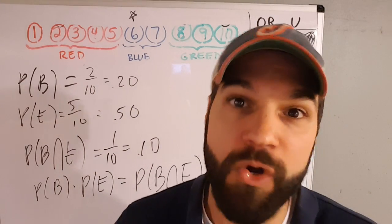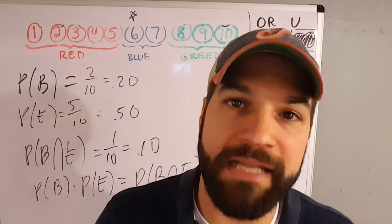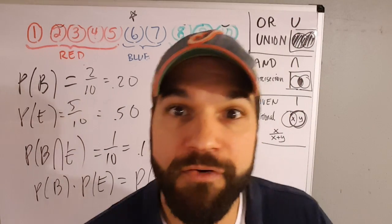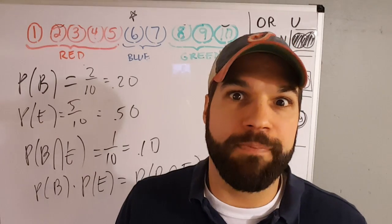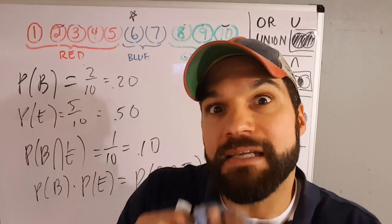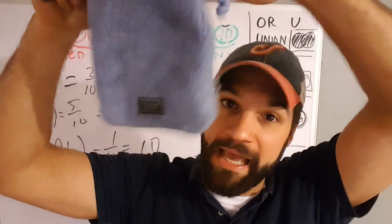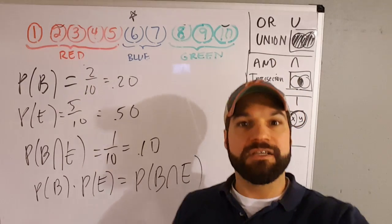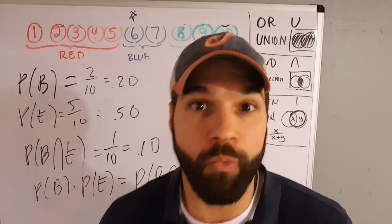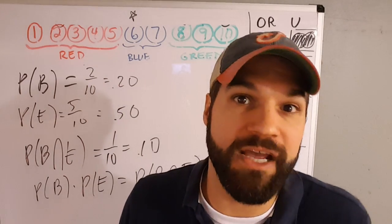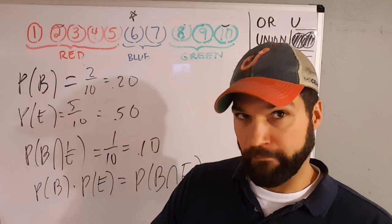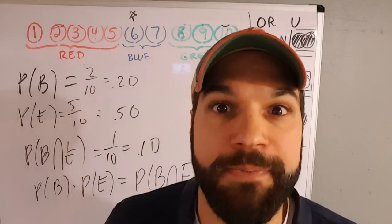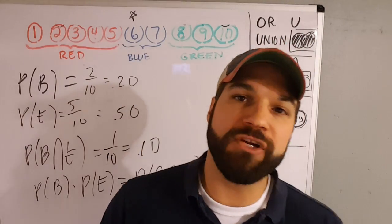Blue and even are independent because knowing one doesn't change the likelihood of the other. For instance, what's the likelihood a chip is blue? A 20% chance. But what if I tell you it's even first — I'm holding an even one? Out of those 5 evens, 1 is blue, which is still 20%. Knowing it was even didn't change the likelihood of it being blue. Likewise, the probability of it being even is 50%. If I tell you it's blue, half of the blues are even — still a 50% chance. So these things are independent.